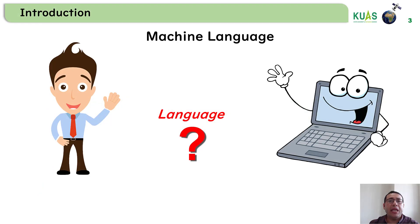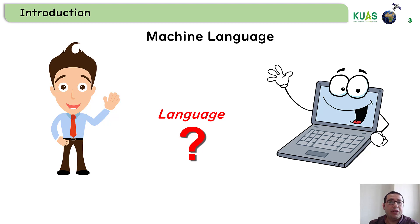We use language to communicate with each other. For example, we can use English to talk to each other, or Japanese, or Arabic, or any other language. But the question is, when you wish to contact or communicate with your computer or machine, which language are you going to use?